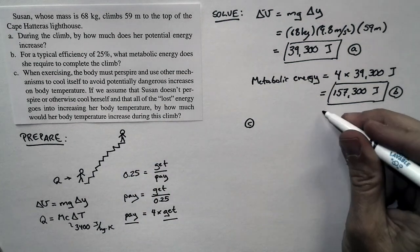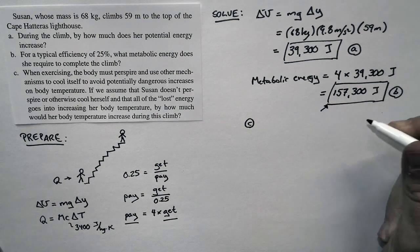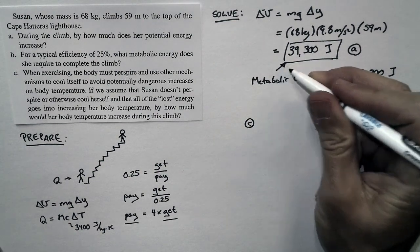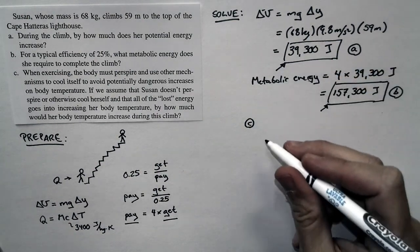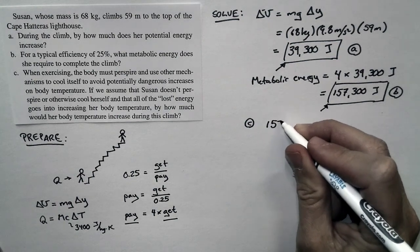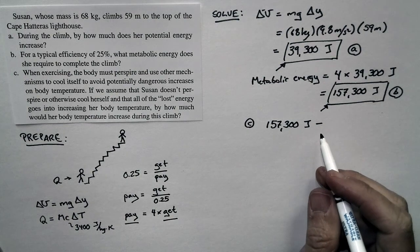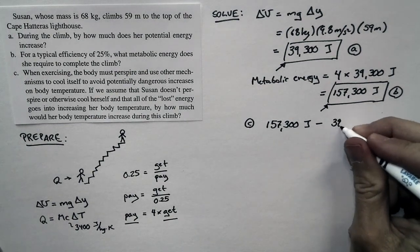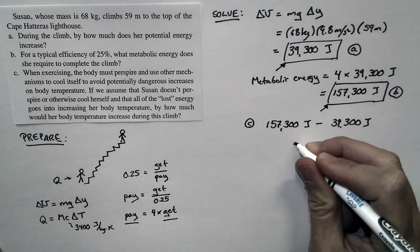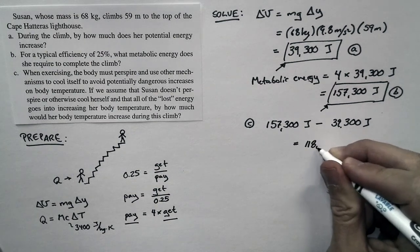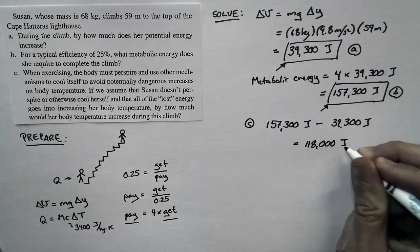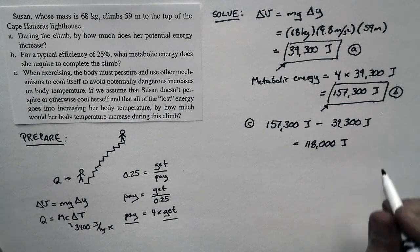Her body uses this much metabolic energy. This much is expressed as an increase in potential energy. The difference between these two, so 157,300 joules burned as metabolic energy minus the 39,300 joules changed in potential energy, the difference, or 118,000 joules, that just goes into thermal energy.